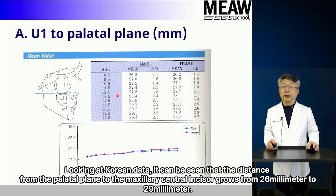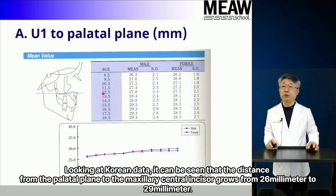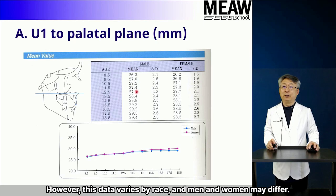Looking at Corion data, the distance from the palatal plane to the maxillary central incisor grows from 26 mm to 29 mm. However, this data varies by race, and men and women may differ.